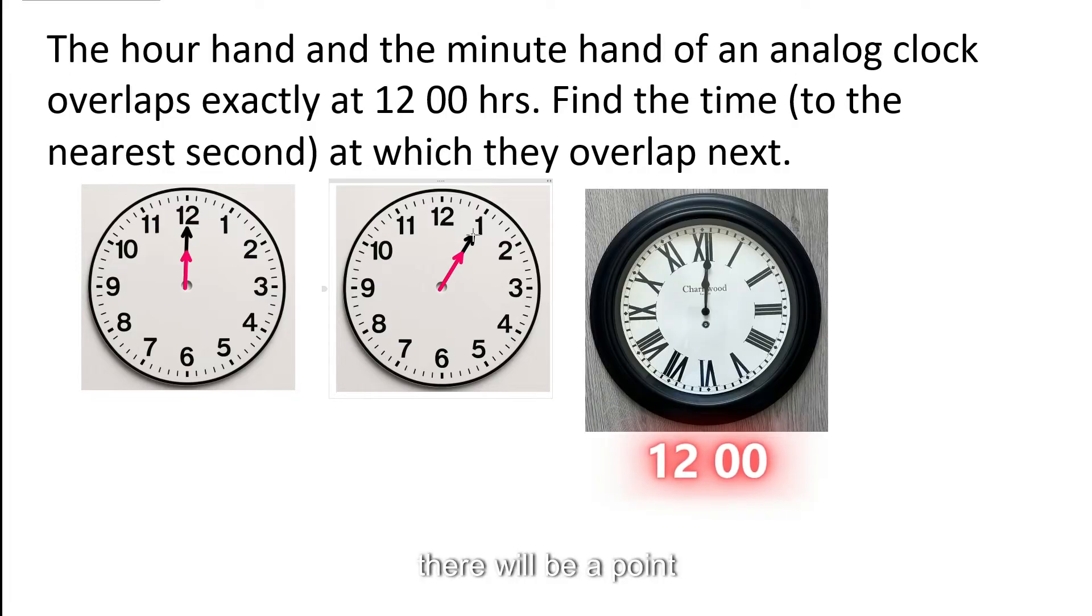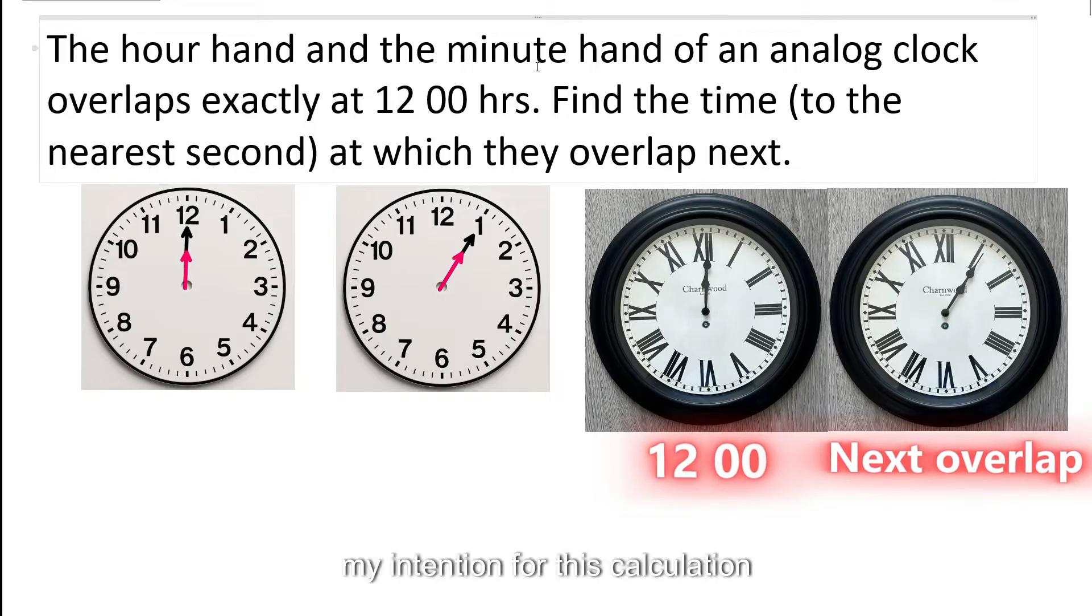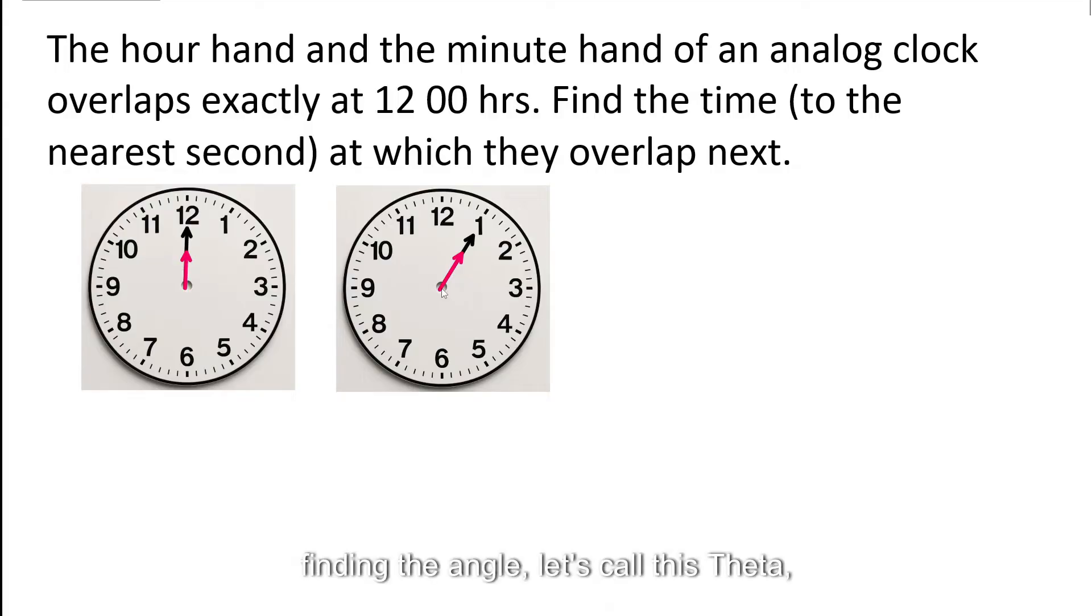So my intention for this calculation is finding the angle, let's call this theta, between this dashed line and the point at which this overlap takes place. So we know the time is one, a couple of minutes past one something, but we need to exactly work out what that time is. That is the question here.